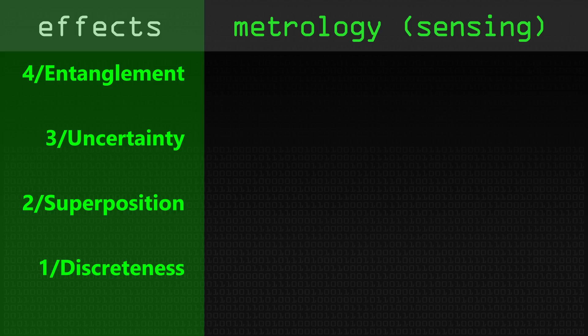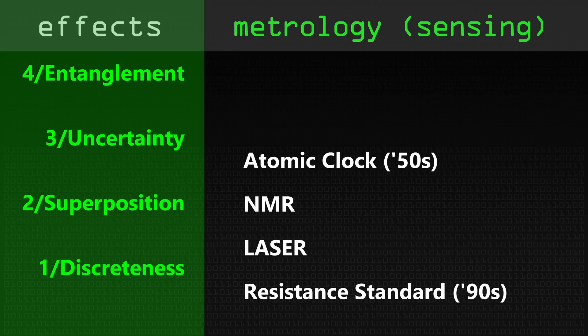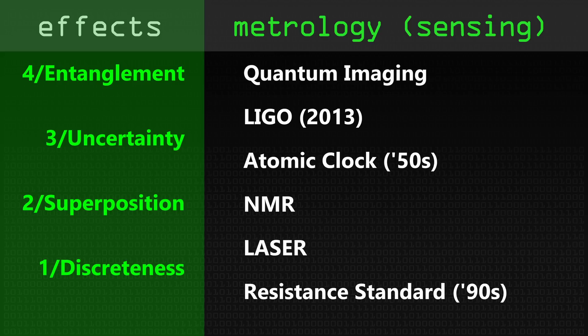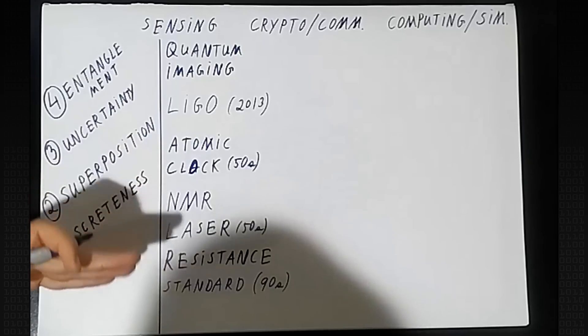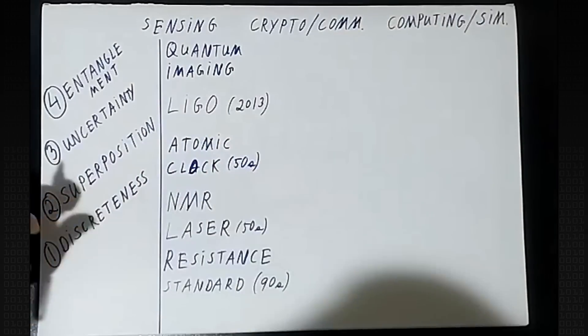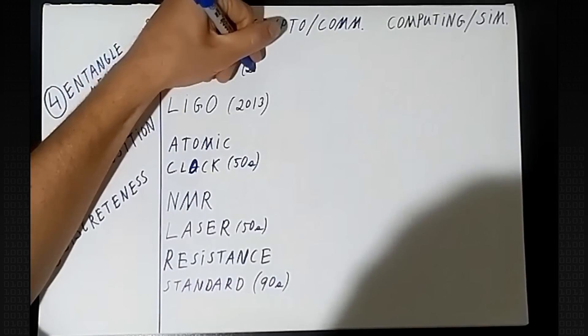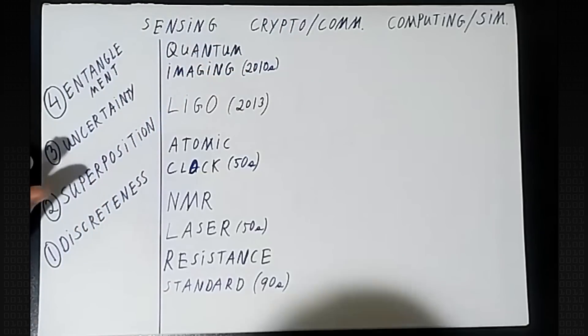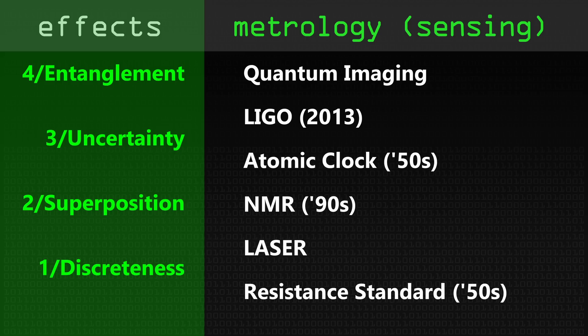Going back in time, the first technology that utilized discreteness of energy levels is NMR — nuclear magnetic resonance — one of the earliest uses of quantum technologies. Another is the laser, resistance standards, atomic clocks, and the principle of uncertainty helped us detect gravitational waves. Nowadays, we have quantum imaging, where several different technologies enhance current imaging standards like PET or NMR, as well as create new ones. Collectively, you can call this quantum imaging or quantum metrology, and it's the most long-studied paradigm for application of these effects.